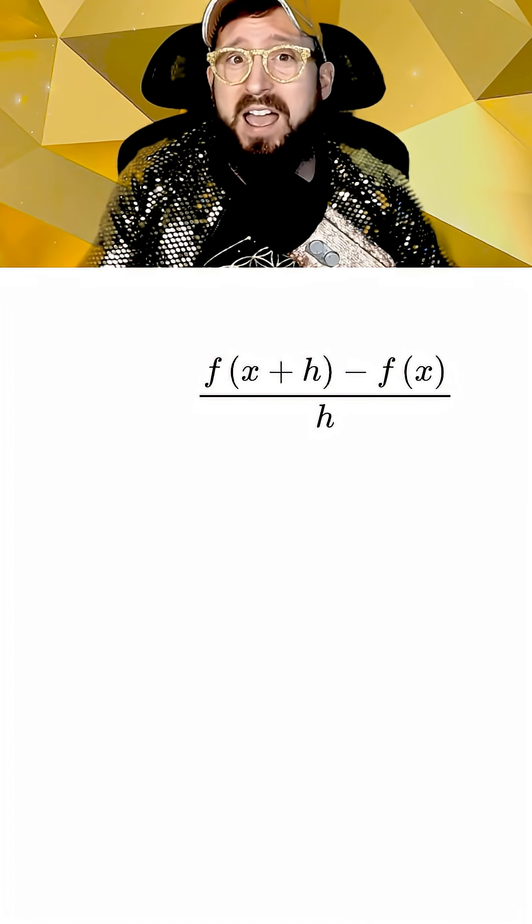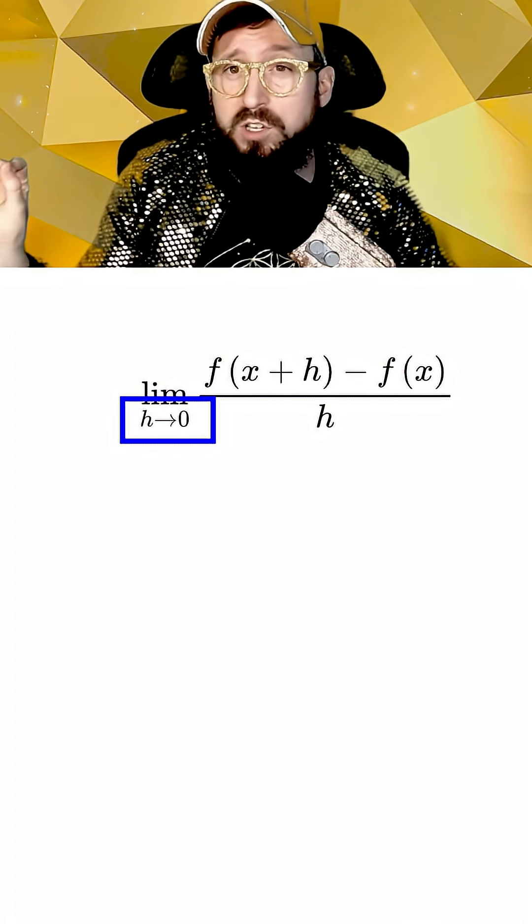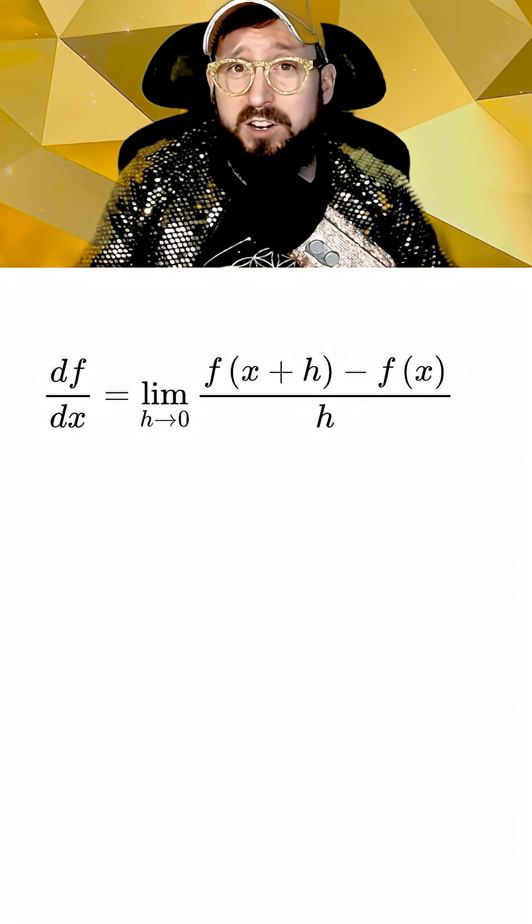It turns out that the way to represent this in math is by writing our slope equation as a limit where h approaches zero. And this is what ends up being the same thing as the limit definition of a derivative. But enough about the theory, what if we need to do this for an actual homework problem?